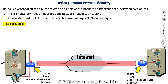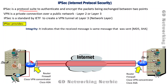IPSec actually provides us integrity for our messages. Integrity indicates that the received message is actually the same message which was sent from the transmitting end — meaning the contents of the message have not been changed. To achieve this integrity we can use algorithms like MD5 or SHA.